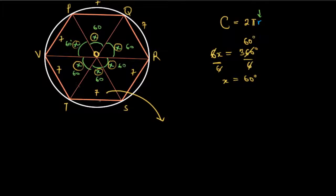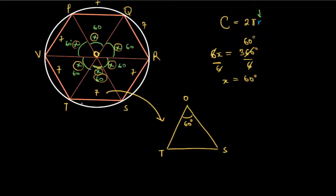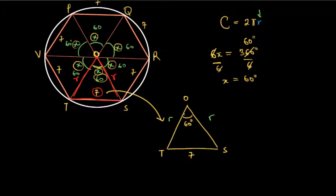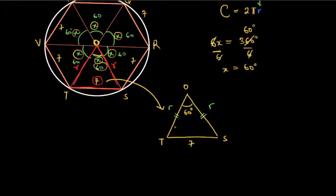Drawing triangle OTS: O is the center, T and S are vertices of the polygon. The central angle at O is 60 degrees, and the side TS equals 7 cm. Since OT and OS both go from the center to the circumference, they are both radii and therefore equal. Because OT equals OS, the base angles at T and S are equal, both called theta.